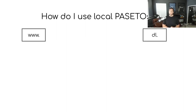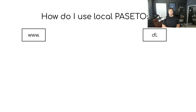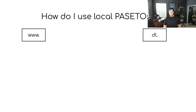How do you use local PASETOs in a real-world application? Let's say you're building a website that allows users to purchase and download videos. Your website runs at www.example.com and handles all the logistics — creating users, letting them purchase videos, and so on. Then you have a separate service running at dl.example.com, a very simple download service that allows users to download files they've already paid for.